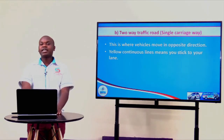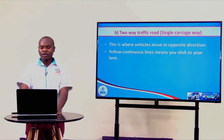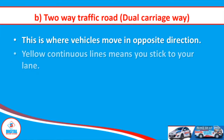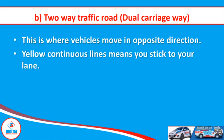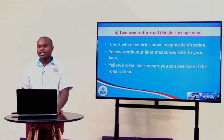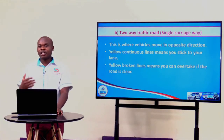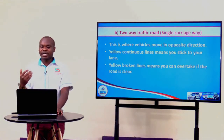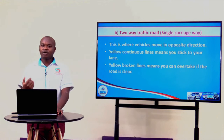You can find yellow continuous lines or yellow broken dotted lines. In a yellow continuous line you're not supposed to change lane — you have to stick to your lane. But in a yellow broken line, if it is safe or the road ahead is clear, you can overtake.